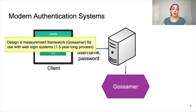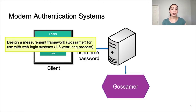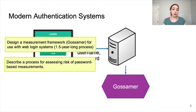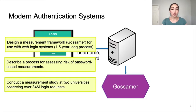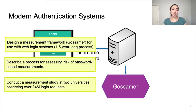In this paper, we designed a measurement framework that we call Gossamer for measuring password-derived information in web login systems. This was a one and a half year-long process in close collaboration with our university security engineers. We also describe a process for assessing the risk of individual password-based measurements via a simulation. And finally, we conduct a measurement study at the two universities on over 34 million login requests, and we report our findings on login user behavior regarding passwords.